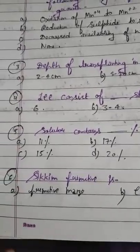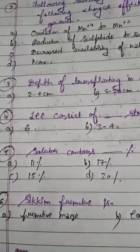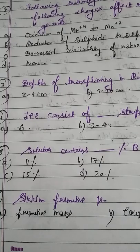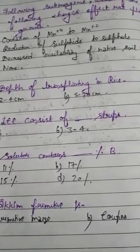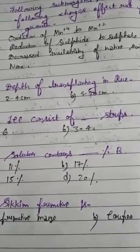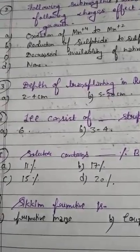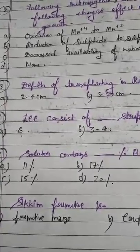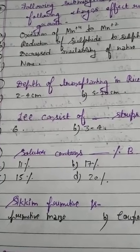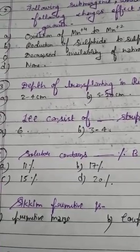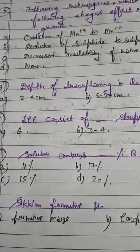Question 3 is very easy. Depth of transplanting in rice — Option A: 2-4 cm, Option B: 5-10 cm. The correct answer is 2-4 cm.